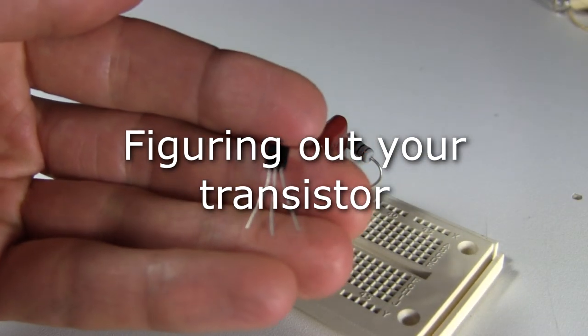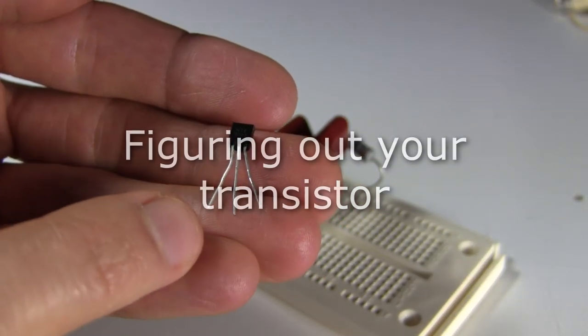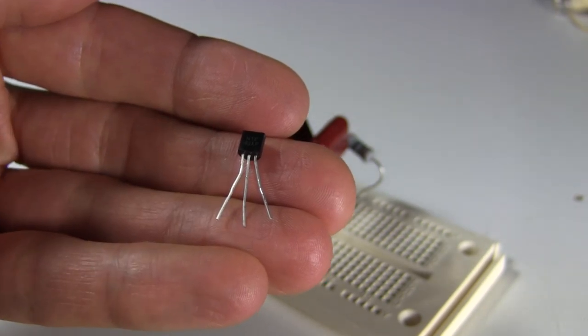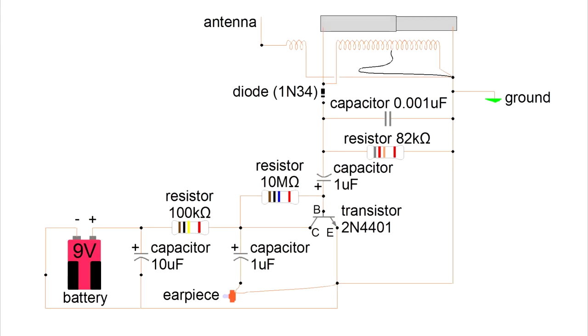This small part is the transistor. It has three wires. So hopefully your transistor came with a drawing that tells you which wires are what. In the symbol, this end is called the base. So look for a B, or the word base, in your drawing.